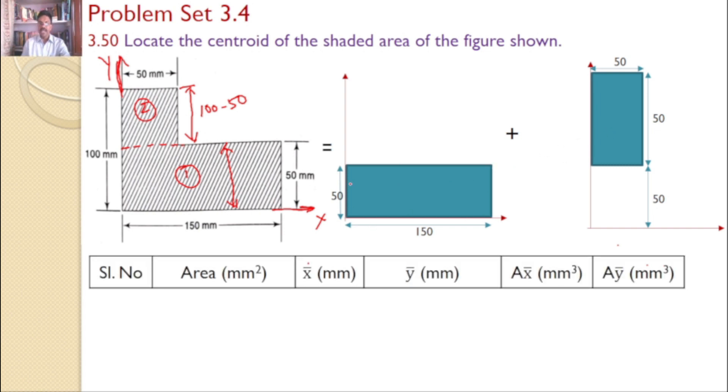Now let us consider the first rectangle. The centroid is exactly at the center. This is y1 bar, centroid distance from x-axis, and this is x1 bar, centroid distance from y-axis. Clearly we can see for a rectangle, the centroid is exactly at the center. So x1 bar equals 150 by 2, that is 75, and y1 bar equals 50 by 2, that is 25.